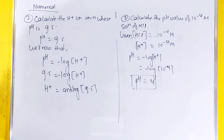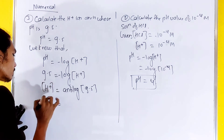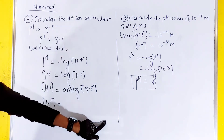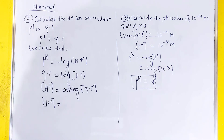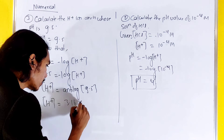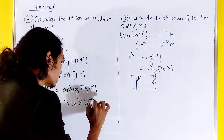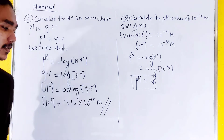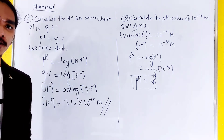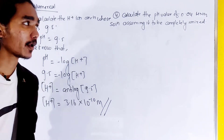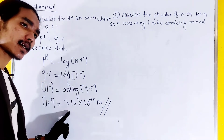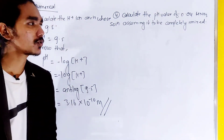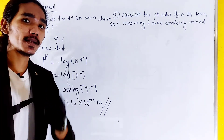So H⁺ ion concentration equals 10 to the power minus 9.5, which calculates to 3.16 into 10 to the power minus 10 M. Now question number 4: calculate the pH value of 0.04 M HNO₃ solution, assuming it to be completely ionized — that is, it is a strong electrolyte.